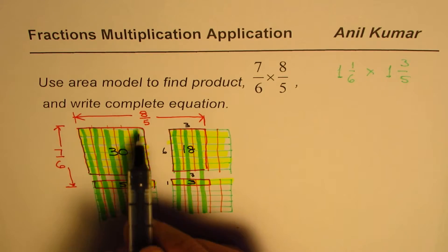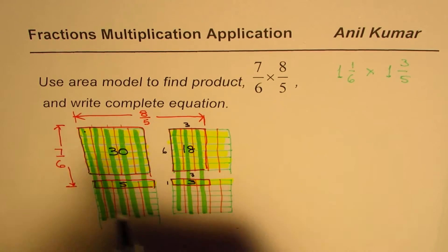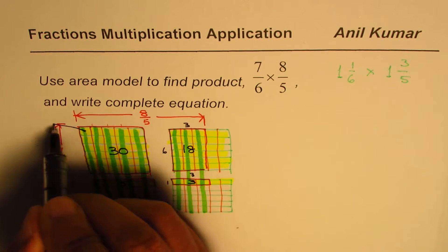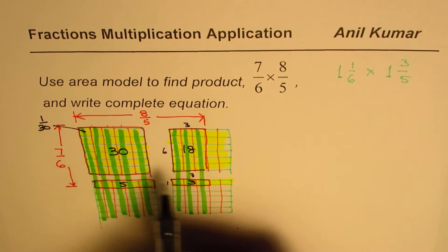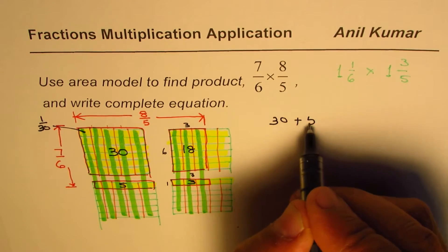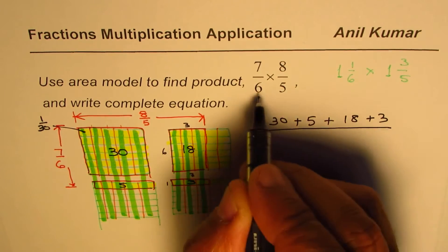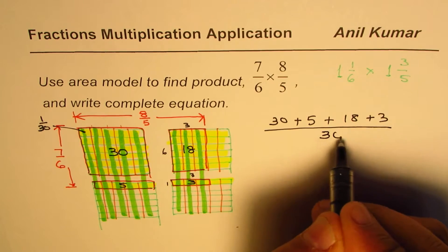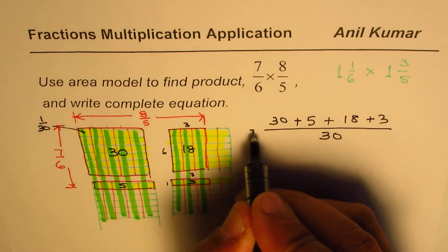So these are the total number of rectangles. And in each, in the big rectangle we have 30. Right. So each is 1/30. Do you see that? Each is 1 over 30. Right. So how many 1 over 30ths? We have 30 plus 5 plus 18 plus 3, all divided by 6 times 5 is 30.